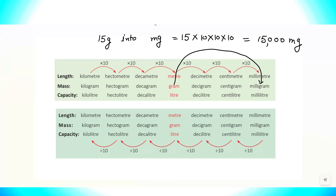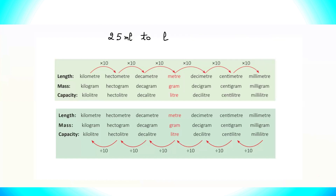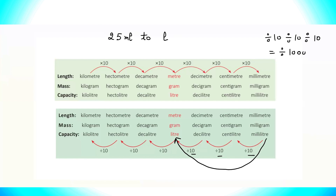Now let's understand converting a smaller unit into a bigger unit. If I have to convert milliliters to liters, I count the tens — there are three. So I divide by 10 three times, meaning I divide by 1000, and I get 0.025 liters. That is how we convert smaller into bigger units.